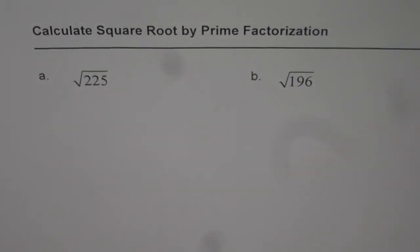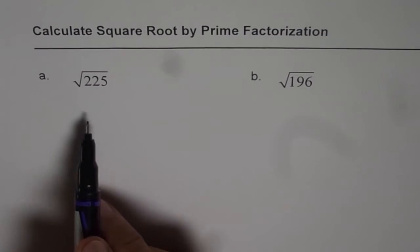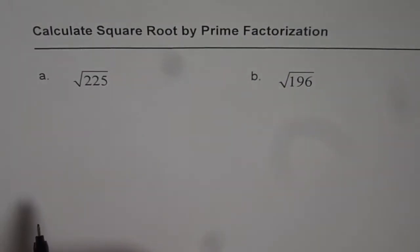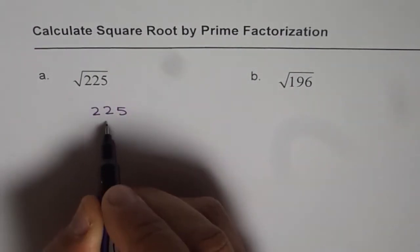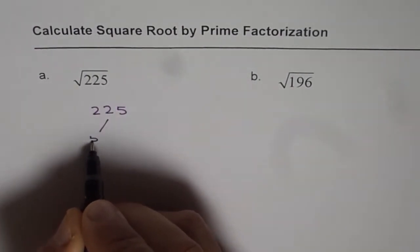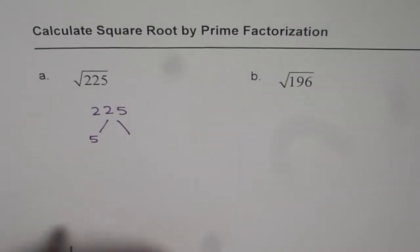Now let's do prime factorization and see what are the factors for the given numbers. 225 ends with 5, so we can divide by 5. Let's divide 225 by 5.